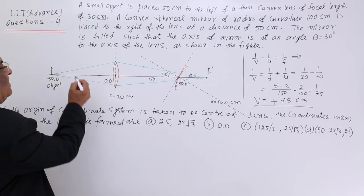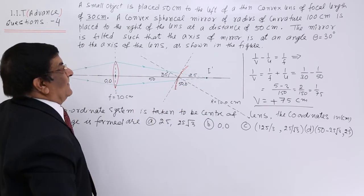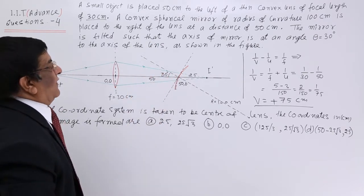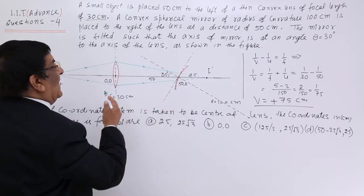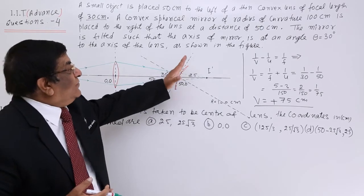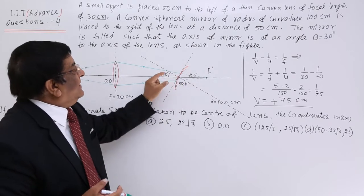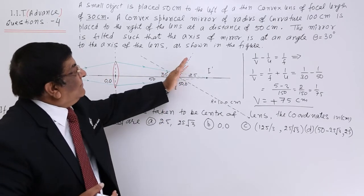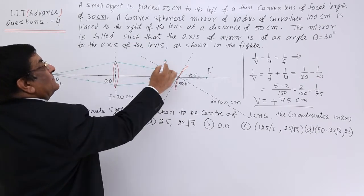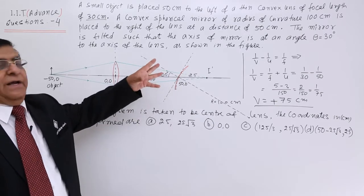This is how the ray diagram through the lens works — the image should form at 75 centimeters, but there is a mirror on the way. As soon as the ray strikes the mirror, reflection takes place, and because of this reflection the rays return back following the rules of reflection. Because the mirror is tilted, the rays going in one direction will be redirected, and that is where we have to find the image.